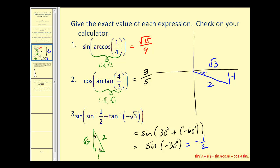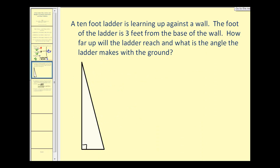Let's take a look at another problem. A ten-foot ladder is leaning up against the wall. The foot of the ladder is three feet from the base of the wall. How far will the ladder reach, and what is the angle the ladder makes with the ground? So the ladder is leaning against the wall. This is going to be ten feet. It's three feet from the base of the wall, so this will be three feet. So this would be the height the ladder will reach, and this would be the angle that it makes with the ground. We want to find h, and we also want to find θ.